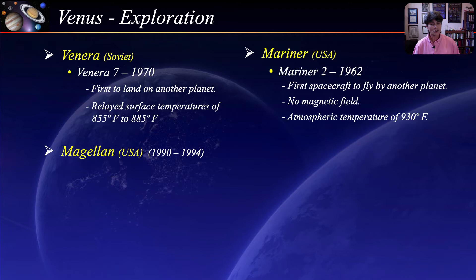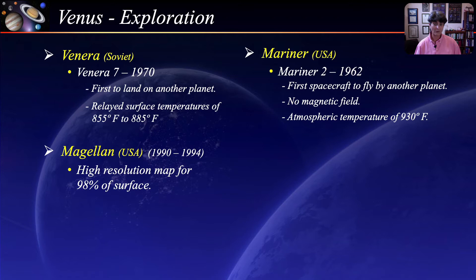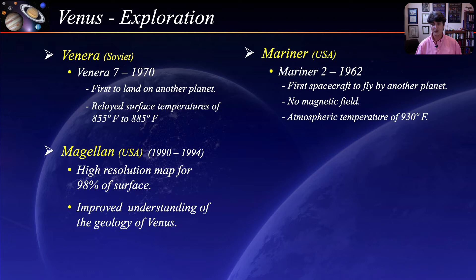Magellan was launched in 1989 from the space shuttle Atlantis — the first interplanetary probe to be launched from the shuttle. Its primary mission was to map the surface of Venus and study its features. Magellan provided the first high-resolution map of 98% of the surface, and greatly improved our understanding of the geology of Venus. The scarcity of impact craters suggests the surface is relatively young, and there are lava channels thousands of kilometers long.